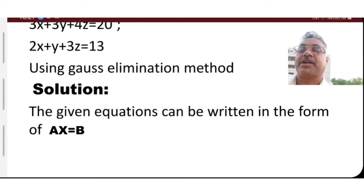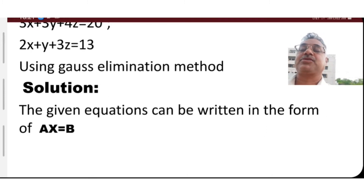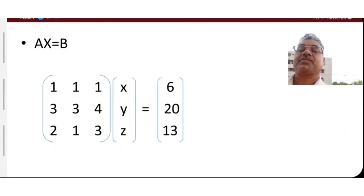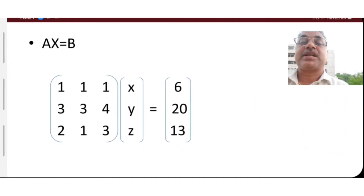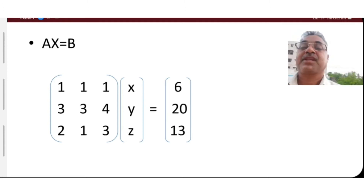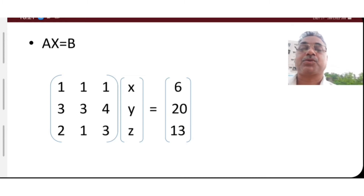In Gauss Elimination Method, we write the given equations in the form Ax is equal to b. The first equation is x plus y plus z is equal to 6, the second equation is 3x plus 3y plus 4z is equal to 20, and the third equation is 2x plus y plus 3z is equal to 13.